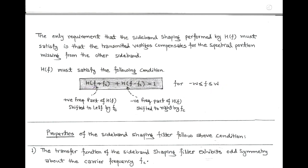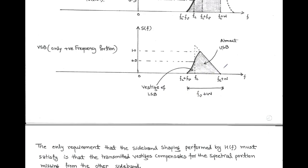Here Fc is the carrier frequency. In this condition, the first term represents the positive frequency part of the bandpass transfer function H(F) shifted to the left by Fc, and the second term represents the negative frequency part of H(F) shifted to the right by Fc. This is the condition that must be fulfilled by the sideband shaping filter to obtain the requirement for the generation of vestigial sideband.